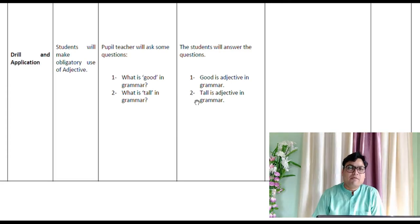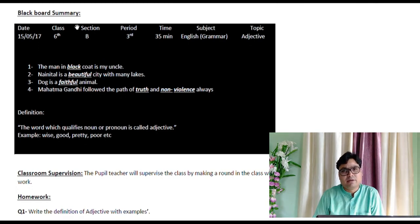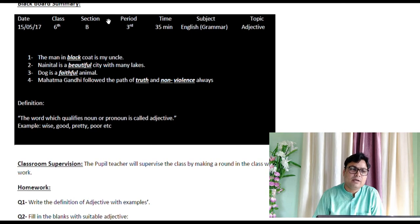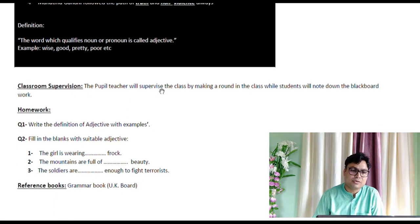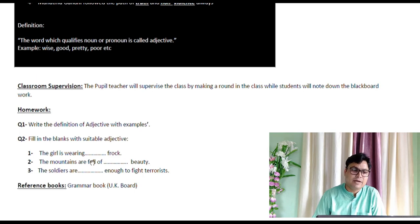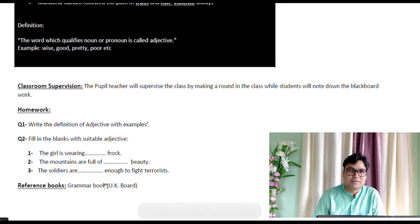Finally, the blackboard summary: as you can see, it is a black piece of paper — similarly, in your note copies, you cut black chart paper and write with a silver pen, filling all the entries as shown. Then classroom supervision: the teacher will make a round in the class to ensure students are writing. Assign homework in the form of short questions, fill-in-the-blanks, or multiple choice questions. Write the reference book name from which the lesson was taken. This concludes the lesson plan of English grammar. Thank you for watching.